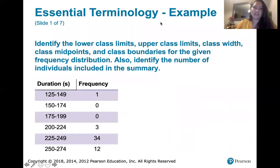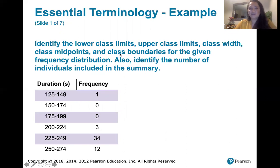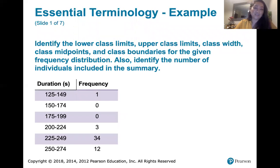Whenever we're given a frequency distribution, we might be asked to identify the lower class limits, the upper class limits, the class width, the class midpoints, and class boundaries. None of those have been defined yet, but they're best defined while looking at an example. We also want to identify the number of data points — in this case, the number of eruptions — that we counted when we created this frequency distribution.